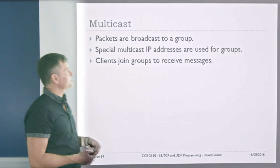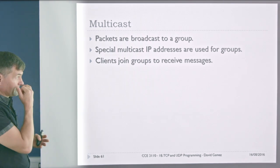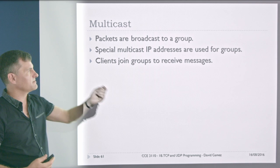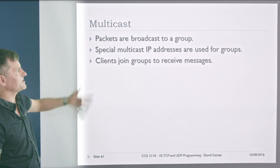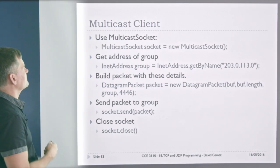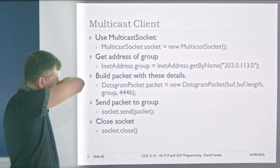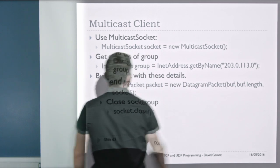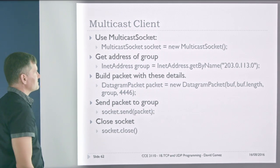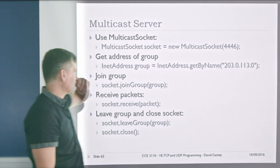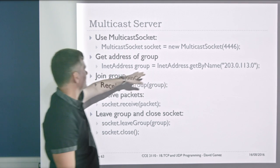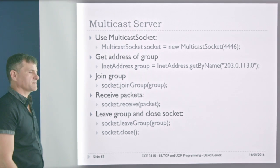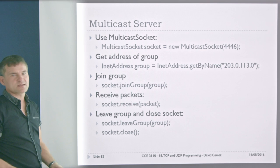A nice thing about UDP is it supports multicast functionality. There are special IP addresses on the network used for groups. You send your packet to the multicast address and other processes on the network can listen for those multicast packets by joining the group. You use a MulticastSocket, get the group address, create a packet, and send the packet to the group. To listen, you get the group name, join the group, and then receive packets sent to that group. It's a bit like subscribing to a topic or an email list.